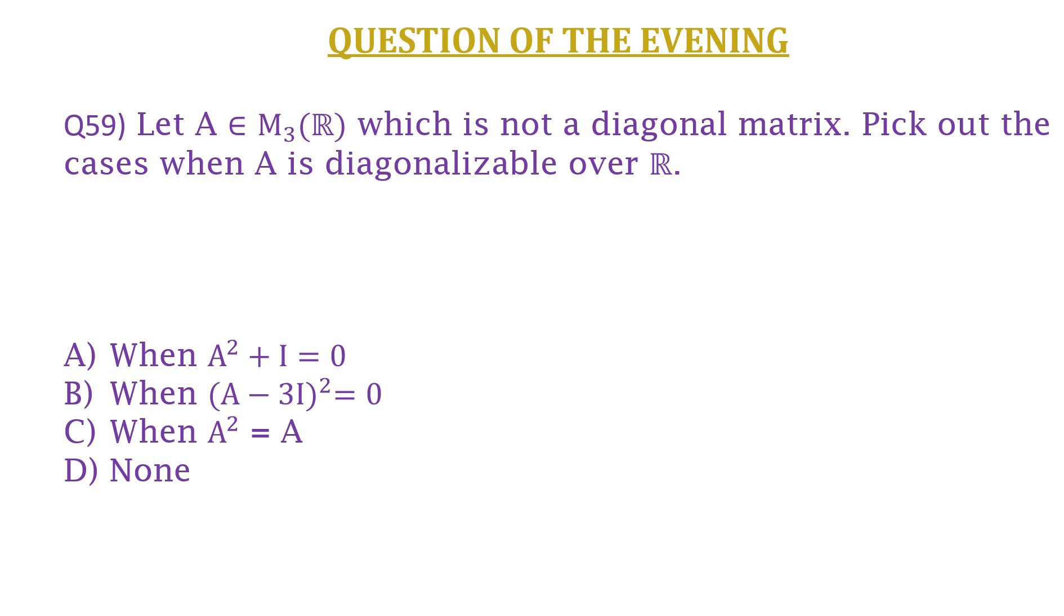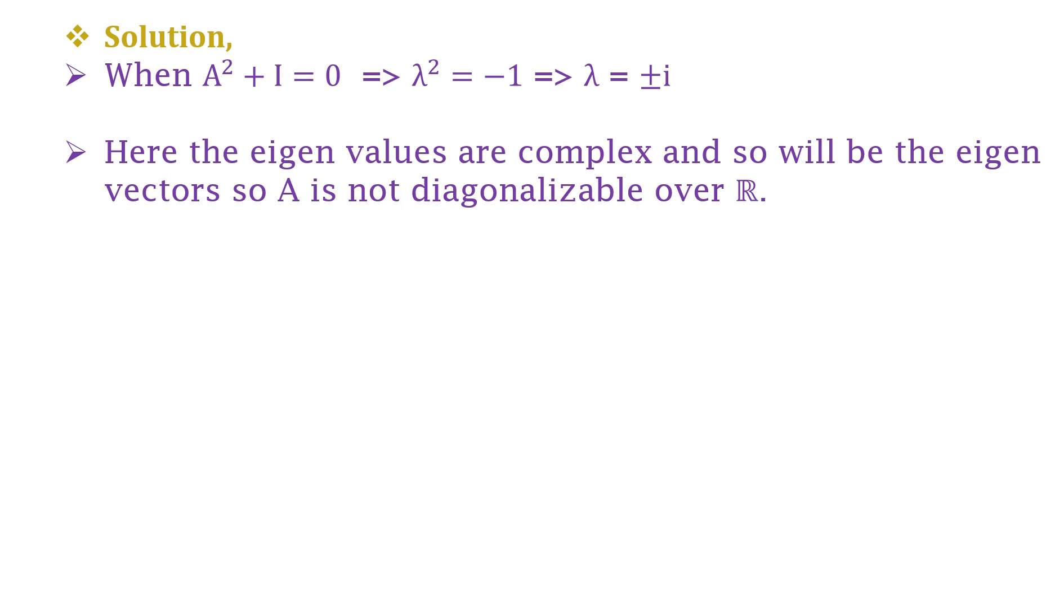Now let us solve the question. For option A, when A² + I = 0, it means that λ² = -1 which implies λ = ±i. Here the eigenvalues are complex, and we know that if the eigenvalues are complex, the eigenvectors will also be complex, and so A is not diagonalizable over ℝ.